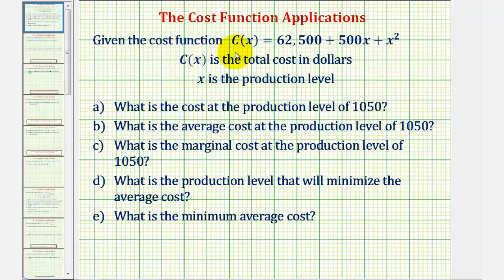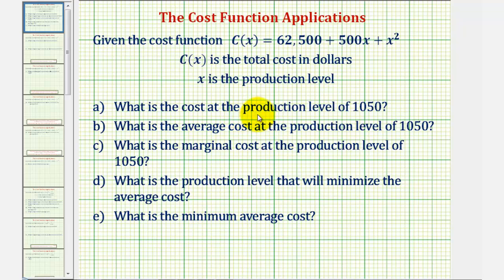We're given the cost function c of x equals 62,500 plus 500x plus x squared, where c of x is the total cost in dollars and x is the production level. We want to answer the following questions. Part A: what is the cost at the production level of 1,050?